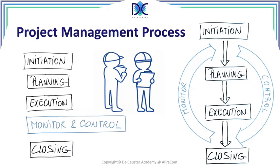We start with project initiation, planning, execution, monitoring and control, and closing. These are all the process steps in the project management process. We're going to look at how we link those to what we call the 10 steps, and I want to describe what are the main things we are going to do in each of those process steps.